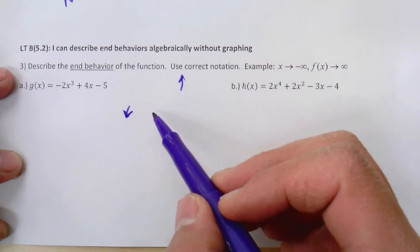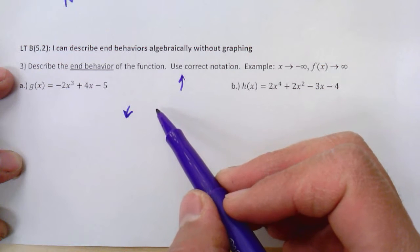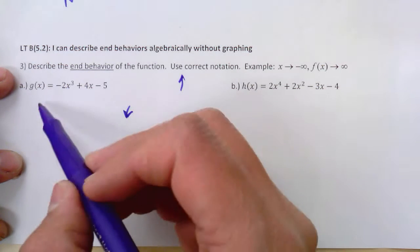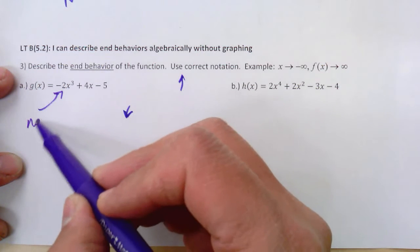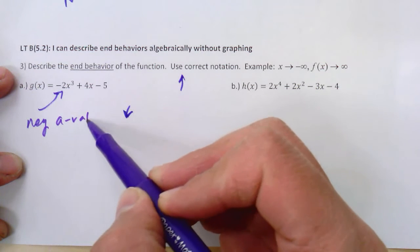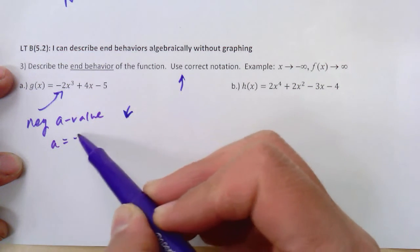but that's when the leading coefficient, the a value, is positive. So this one actually has a negative a value. It happens to be negative 2.